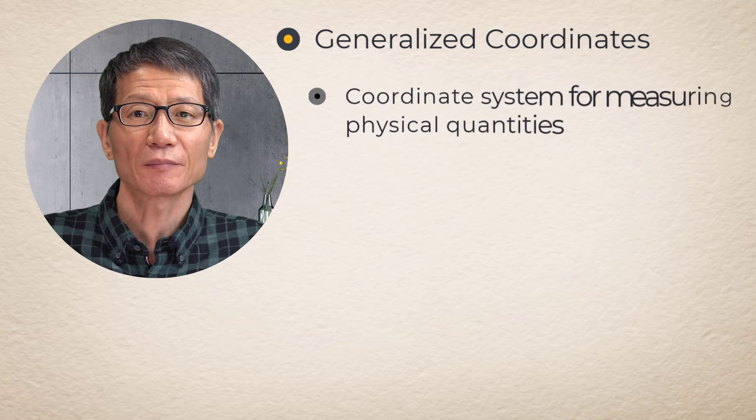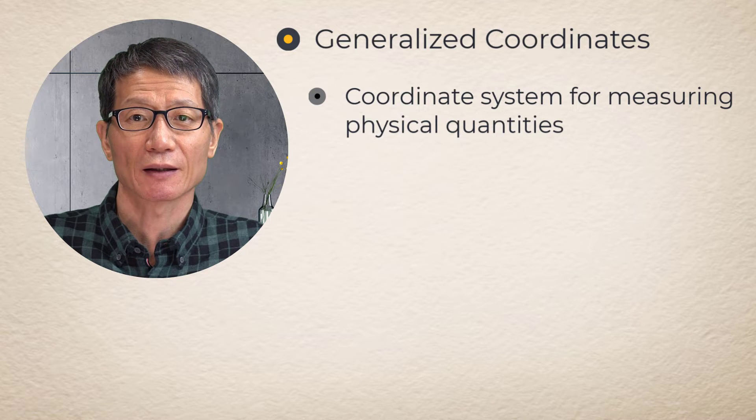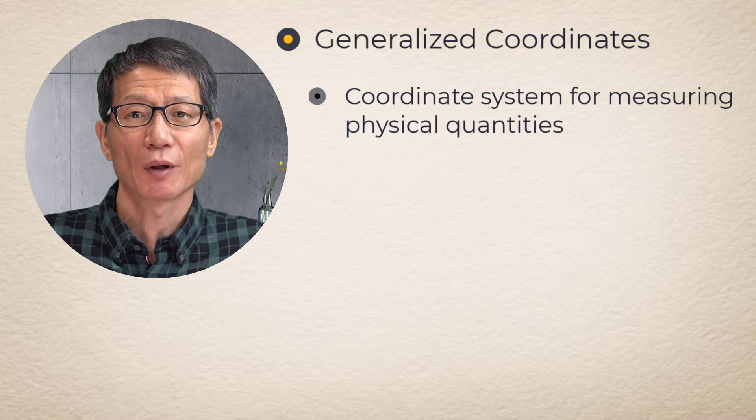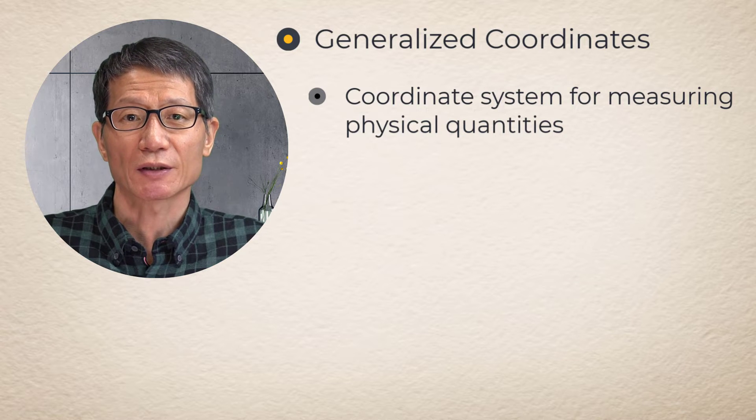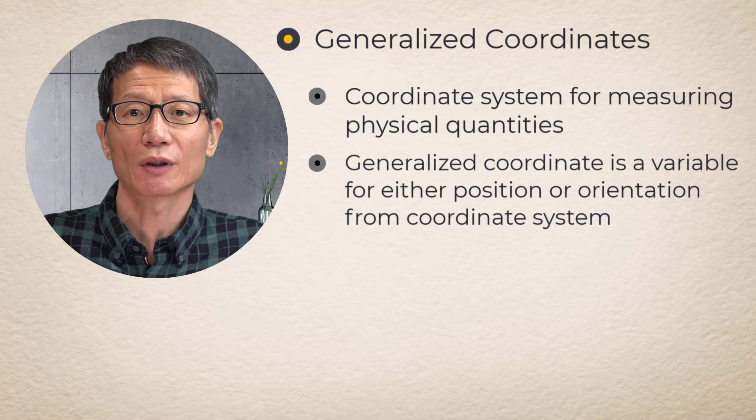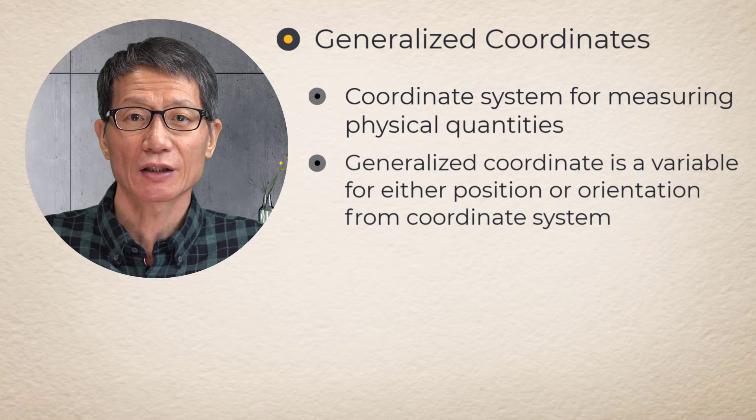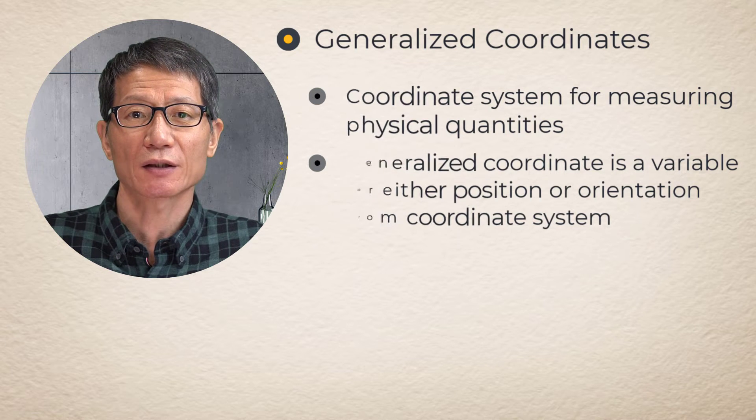A coordinate system is defined to measure physical quantities. Any physical quantity must be measured from the coordinate system. A generalized coordinate denotes a variable specifying either position or orientation measured from a coordinate system.